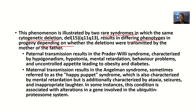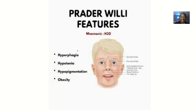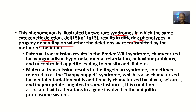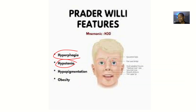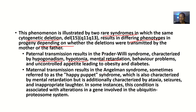If it is from the father, you have Prader-Willi syndrome. It is characterized by hypogonadism — where the gonads are not functioning optimally — hypotonia, mental retardation, and behavioral problems with uncontrolled appetite leading to obesity.